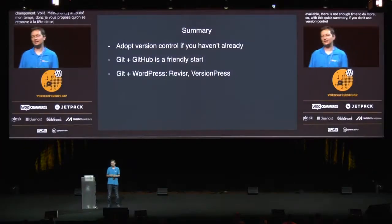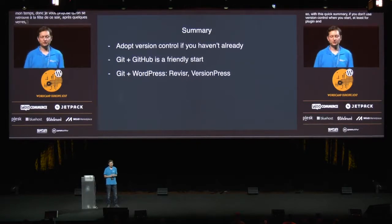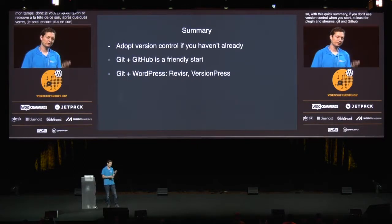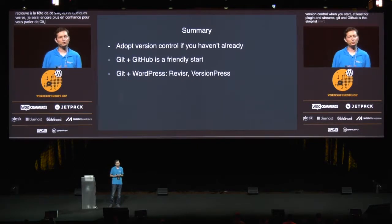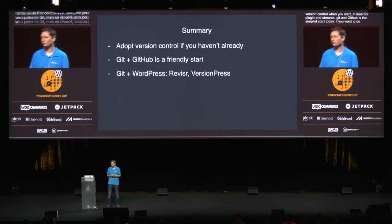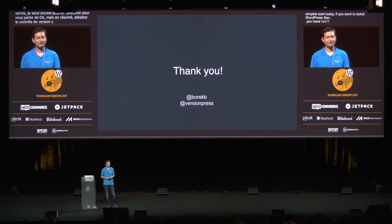I'll be available at the expert bar after this, or at the real bar in the evening, so if you want to come chat about this a little bit more, I'll be available. Quick summary: if you don't use version control, really start — at least for your plugins and themes. Git and GitHub is the simplest start today. And if you want to do full WordPress versioning, you have two options basically: Revisor and VersionPress. That's it. Thank you.